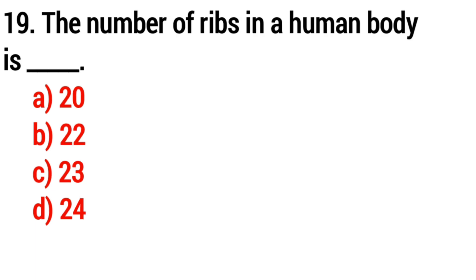Q19. The number of ribs in a human body is? Answer, option D: 24.